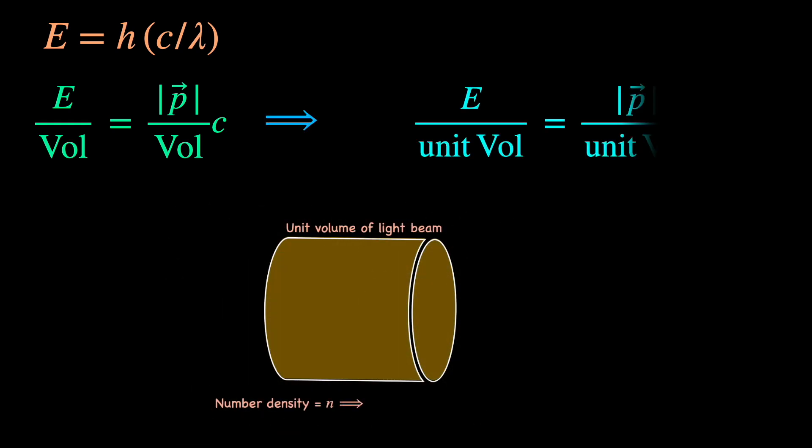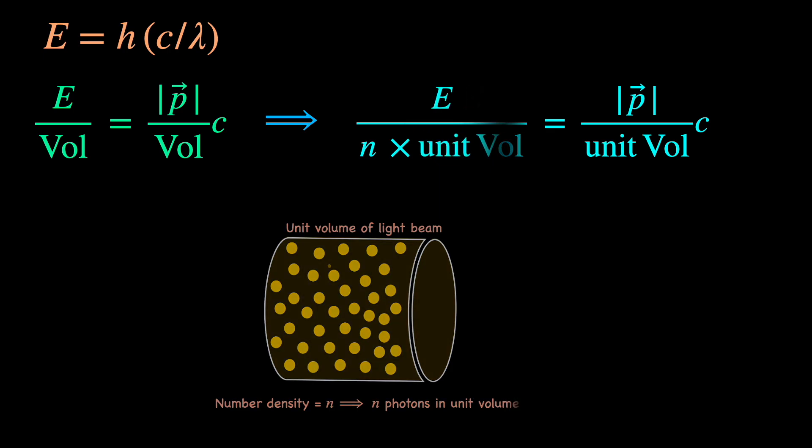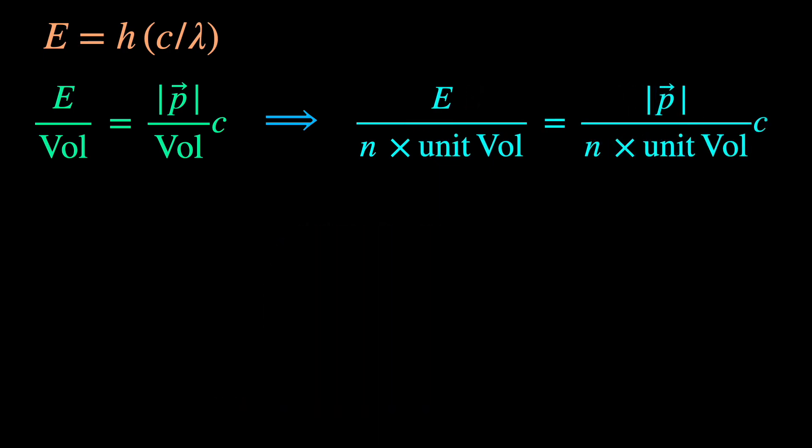Now if we go back to the classical relation connecting the energy and momentum densities of radiation and think of energy and momentum content in unit volume of the light beam and divide both sides by the photon number density, i.e.